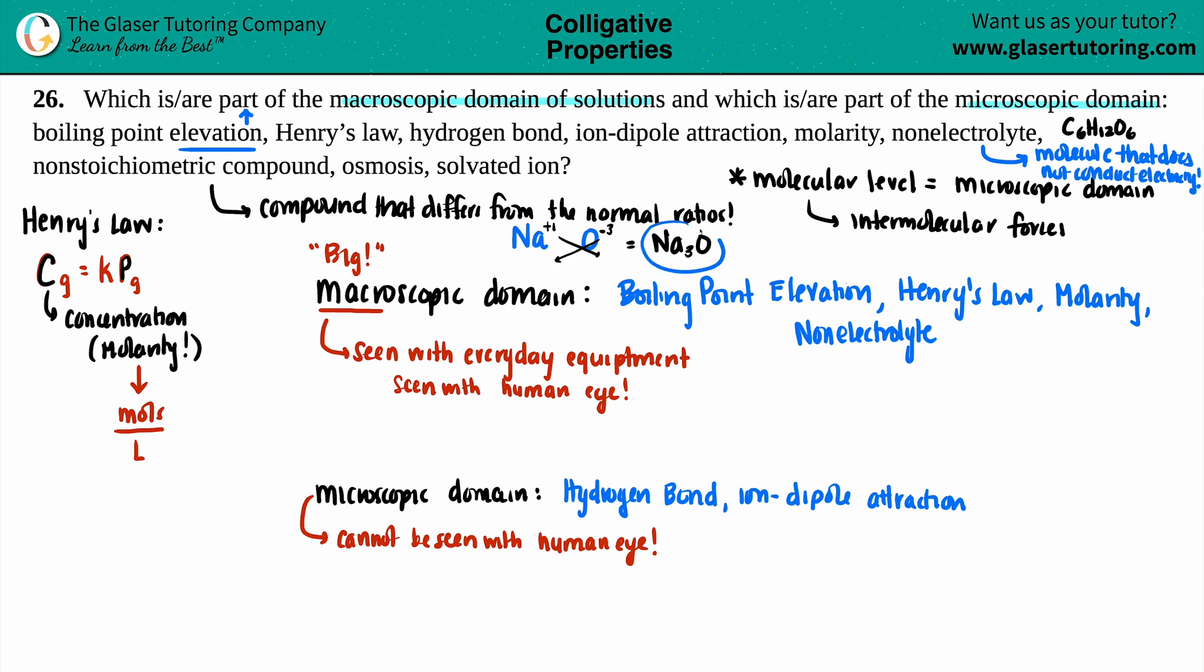But ionic ones, and the ones that we wrote here, Na3O2, if this exists, it would be a solid. And solids can be seen. So, non-stoichiometric compound is going in the macroscopic.